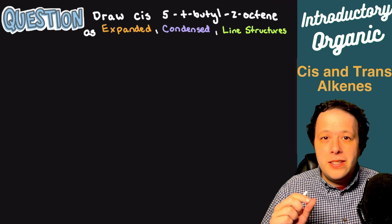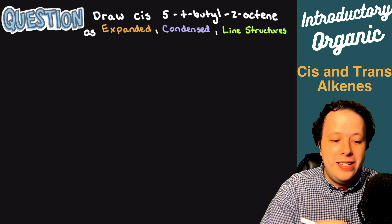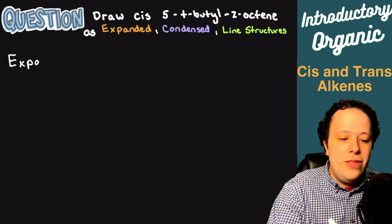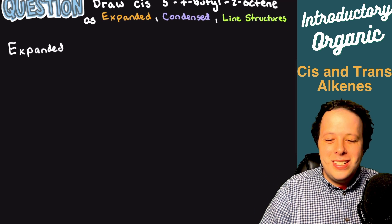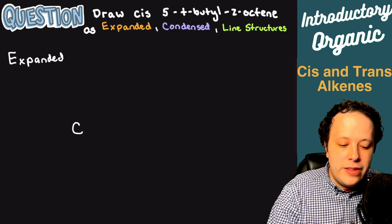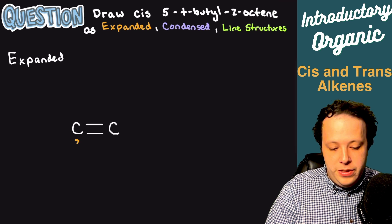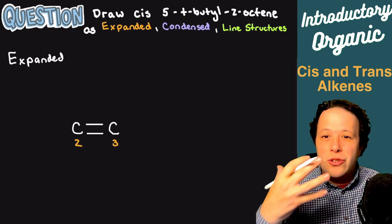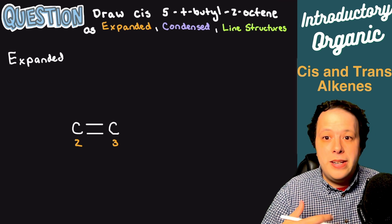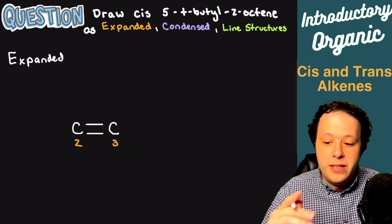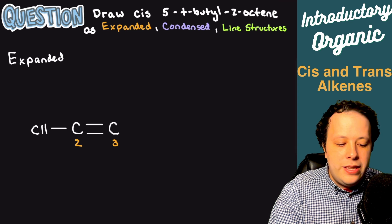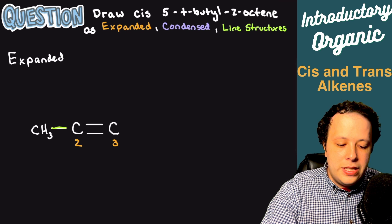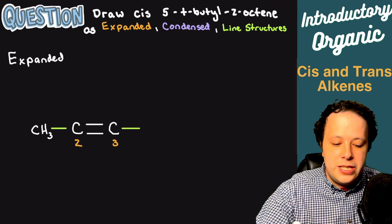For this example, we're going to draw cis-5-t-butyl-2-octene as expanded, condensed, and as a line structure. This is a harder example — I feel like a lot of tutorials and textbook examples always go over really easy ones. With this one, I personally like to start with the double bond itself. When it comes to expanded, the entire idea is we're trying to show all of the bonds. With this one, it's also important to use 90-degree angles as much as possible — it's supposed to represent the Lewis structure. I start with the double bond at number 2, and then fill in the rest of the chain. Being that it is cis, it's easier if you emphasize the carbon bonds going in the same direction — see how they're both going horizontal.